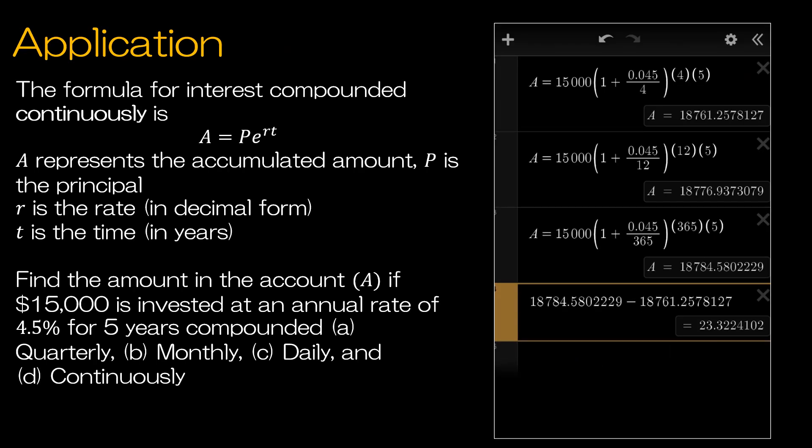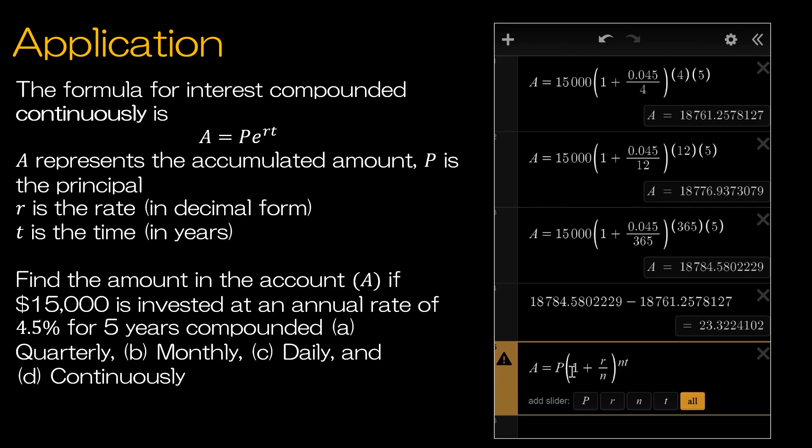We've already taken a look at an application where we are finding the interest based on an investment of $15,000 for five years at a rate of 4.5%. So hopefully you're joining us from our last video where we're talking about just exponential functions and we looked at this application. If not, we looked at a slightly different function than what we have here. We had A is equal to P, and then we had 1 plus R divided by N, and then to the NT. And that's where all of these values came from for compounded quarterly, which is four times a year, monthly, which is 12 times a year, and daily, which is 365 times a year. Now we're going to look at interest compounded continuously, which means it's never just sitting there waiting to be put back into your account. It's immediately put back into your account to continue making interest on top of your interest.